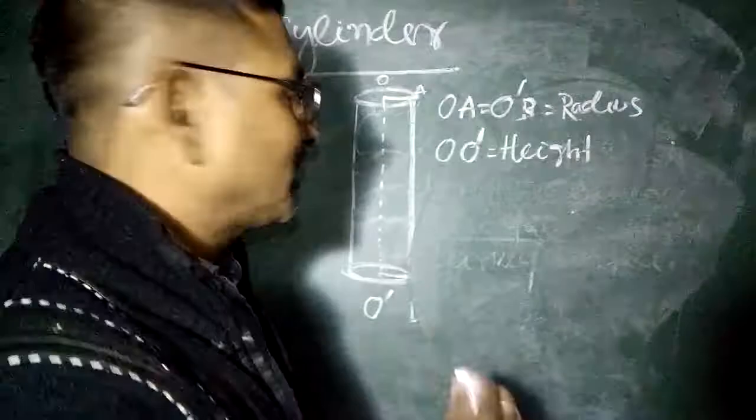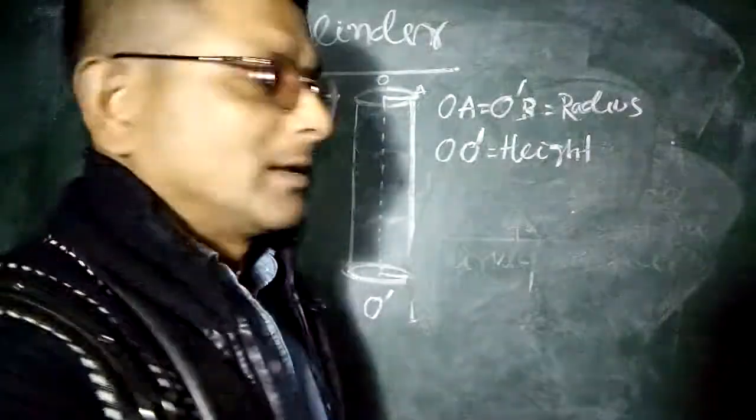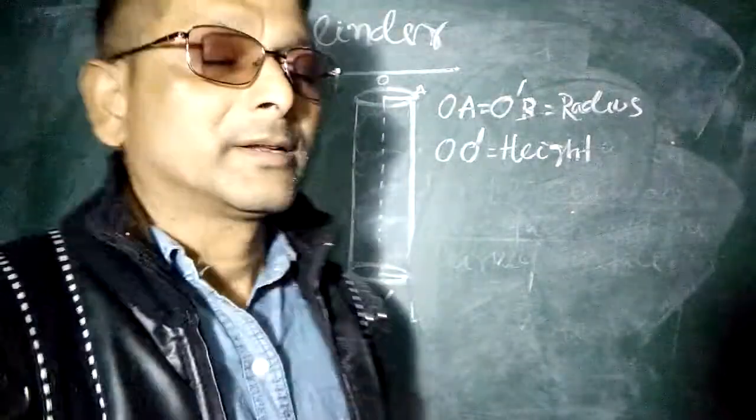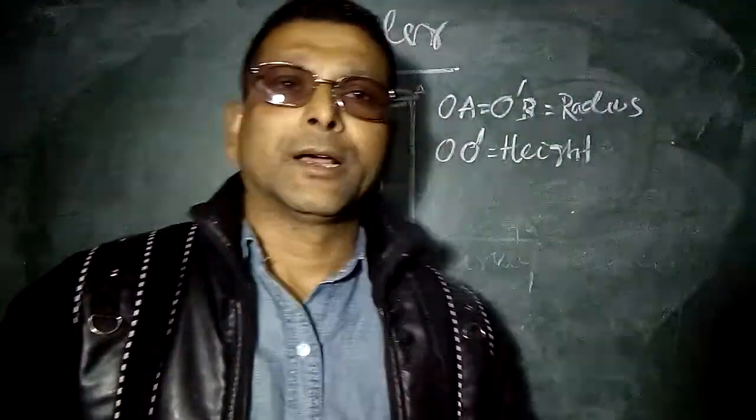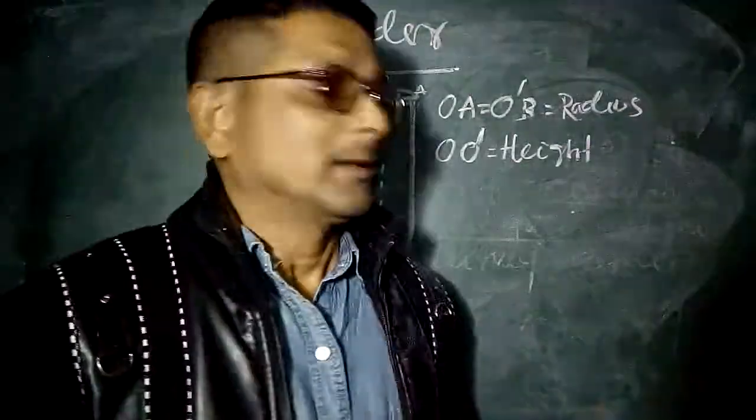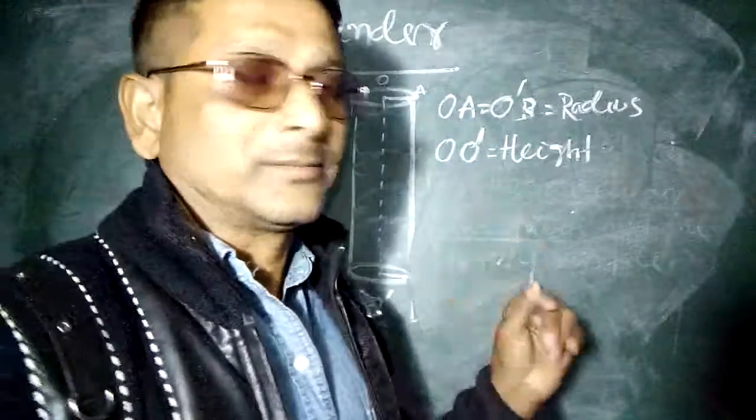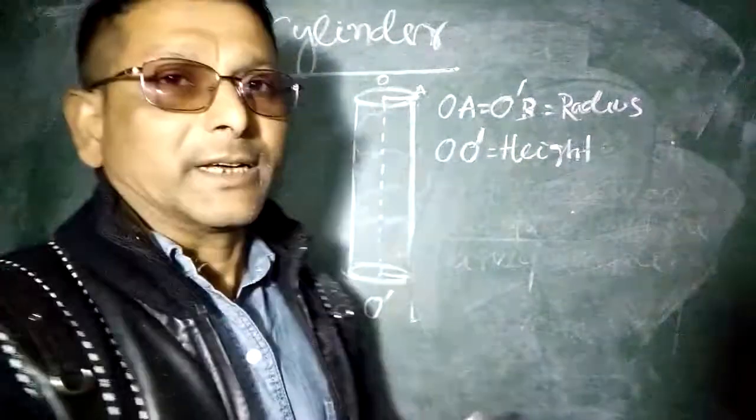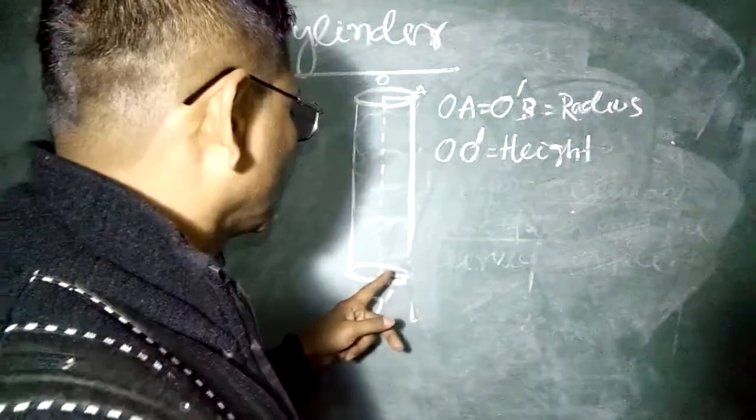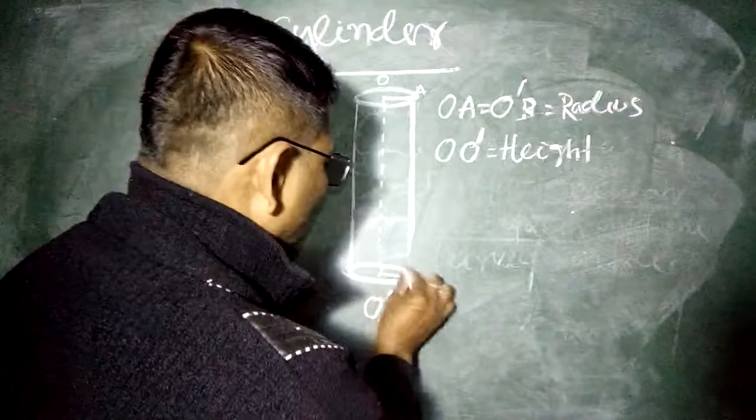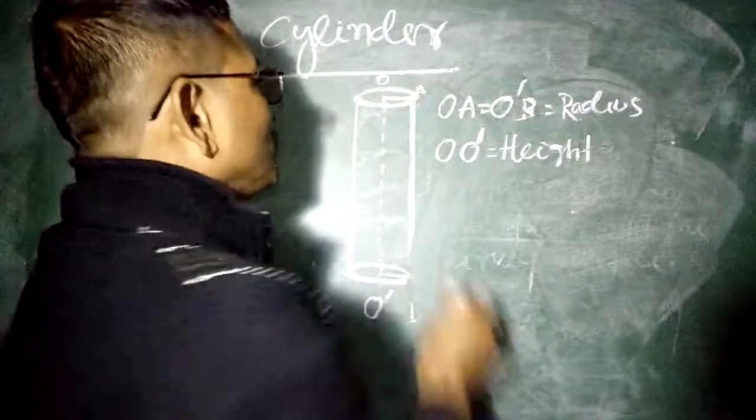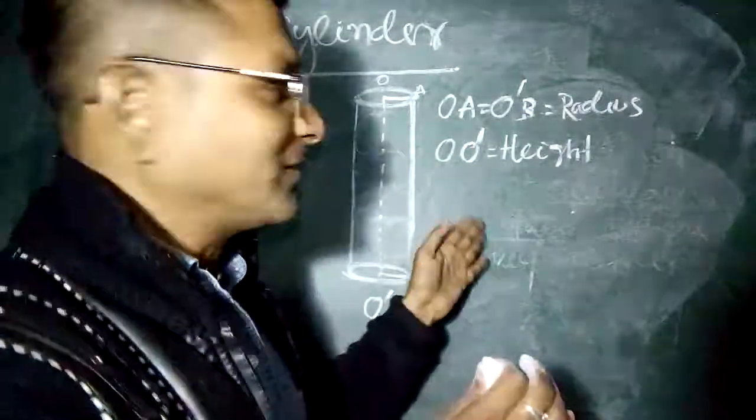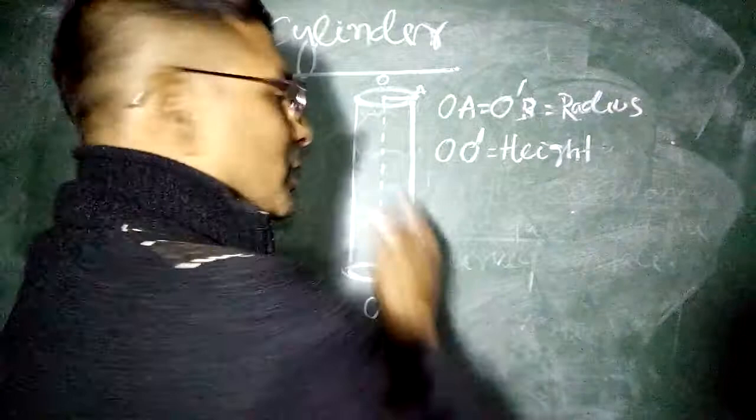And this is like pipe, roll pin, like cylinder, gas cylinder, like this. These are the examples of cylinder and it has two faces, two same faces which are circular and one curved face, two flat faces and one curved surface.